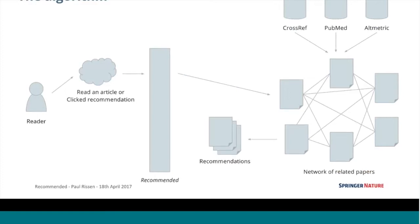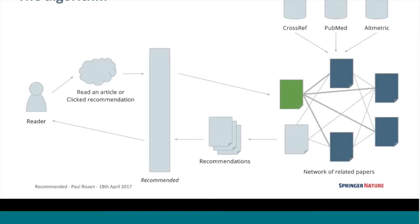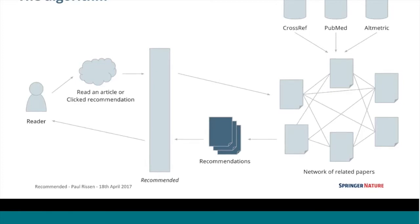We take up to five recommendations and give them back to the reader. The reader reads the paper, we find that paper in our network, find ones which are similar or connected using various measures of connectedness, and send those recommendations back. If a reader then clicks on one of those recommendations, that's a signal to us that it's been a useful recommendation, so we'll improve its score so that next time somebody reads a similar article, it's more likely to be recommended.